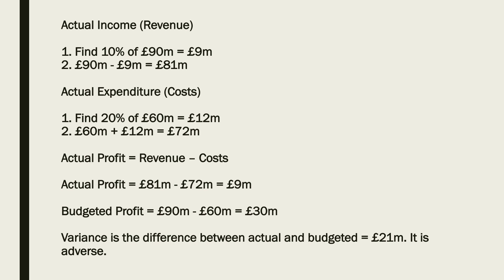So the steps we need to go through: firstly, we need to calculate the actual profit, and to do that we need to get the actual income. Remember, income is just revenue. So for actual income, we find 10% of the 90 million — 10% of 90 million is 9 million. We then take that 9 million away from the 90 million and we get 81 million.